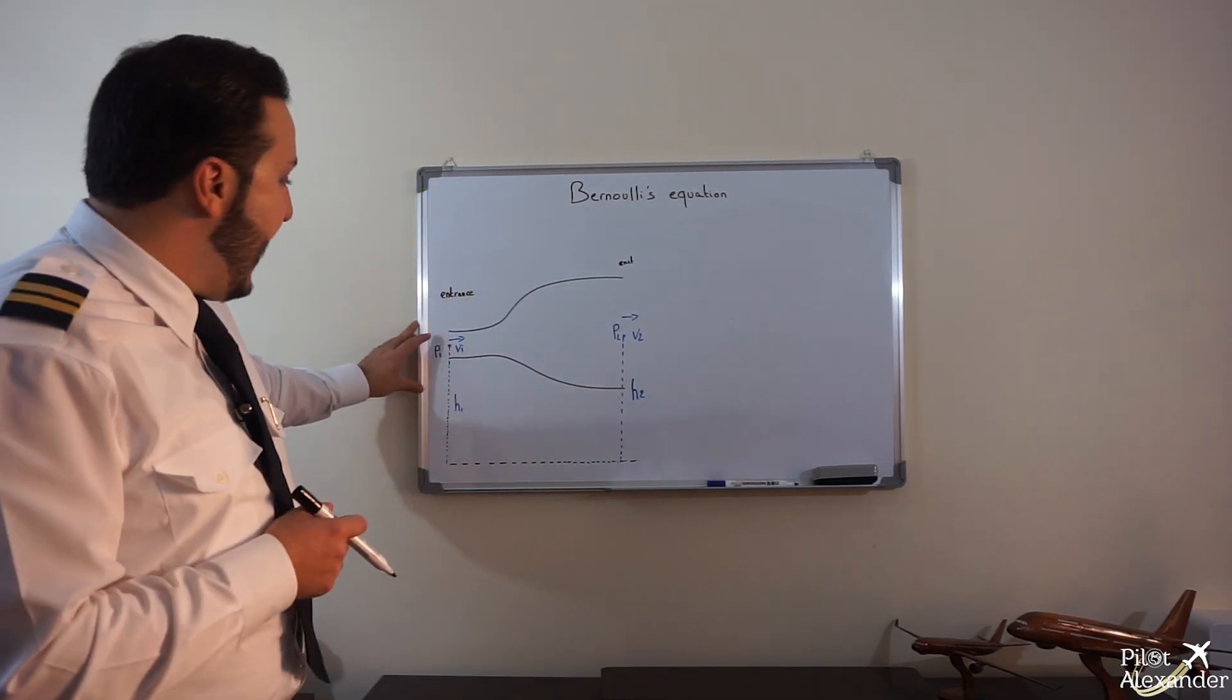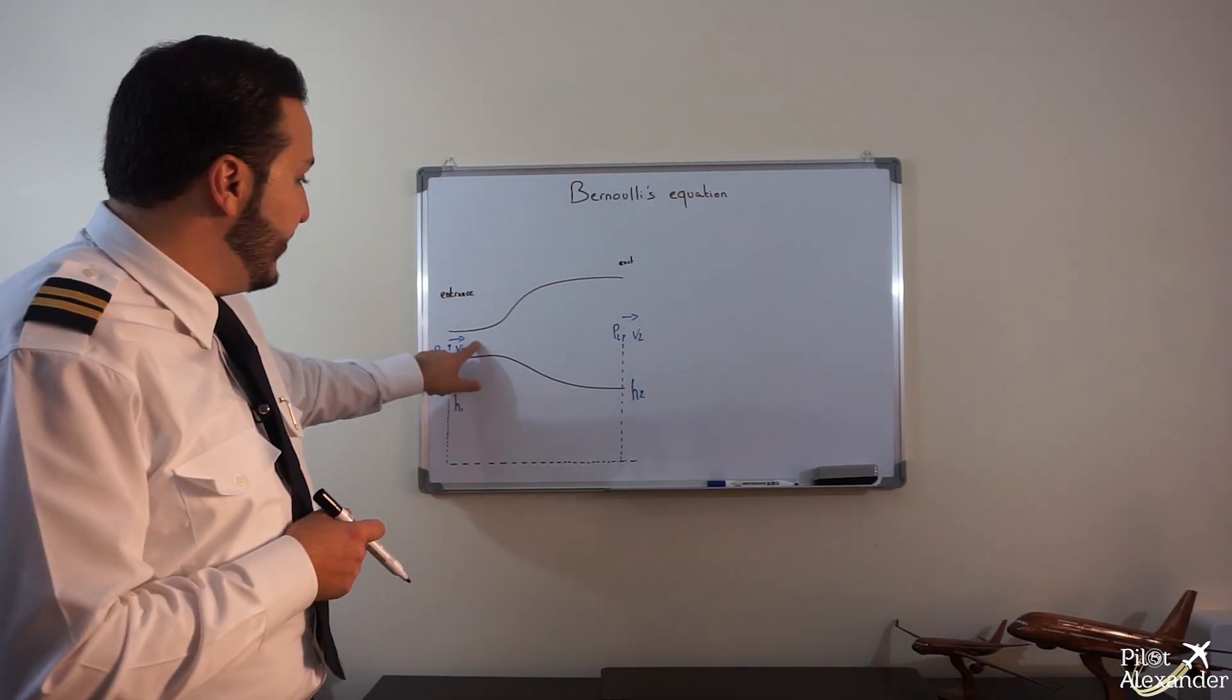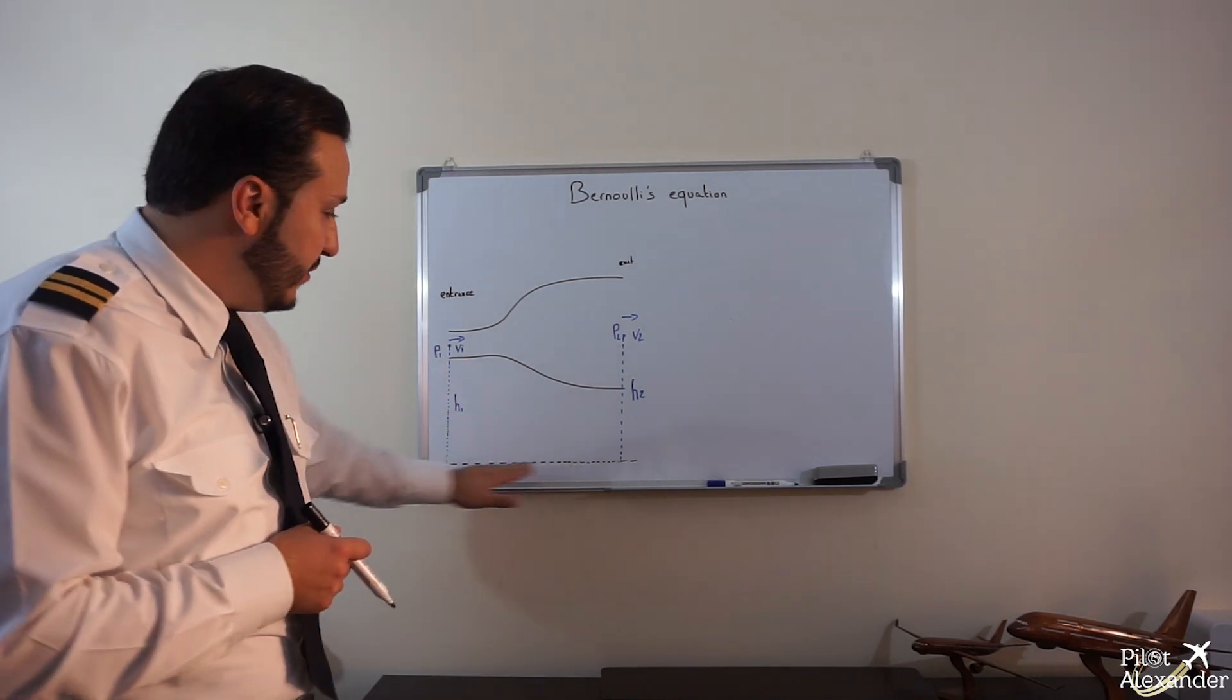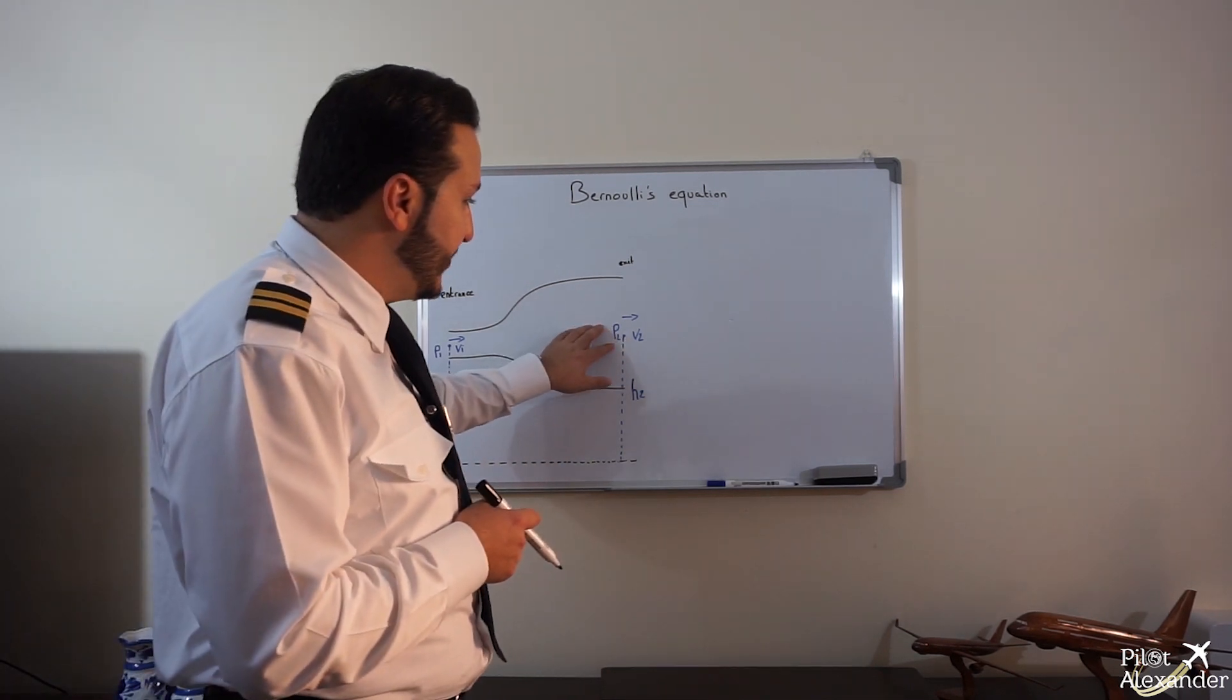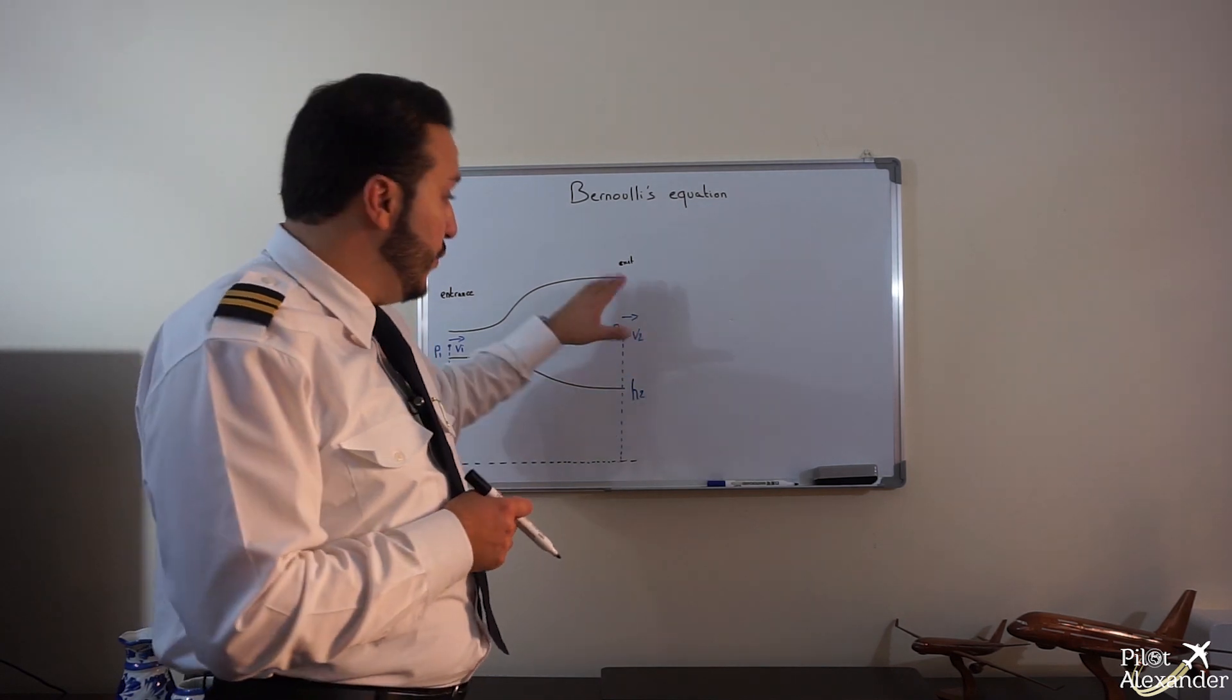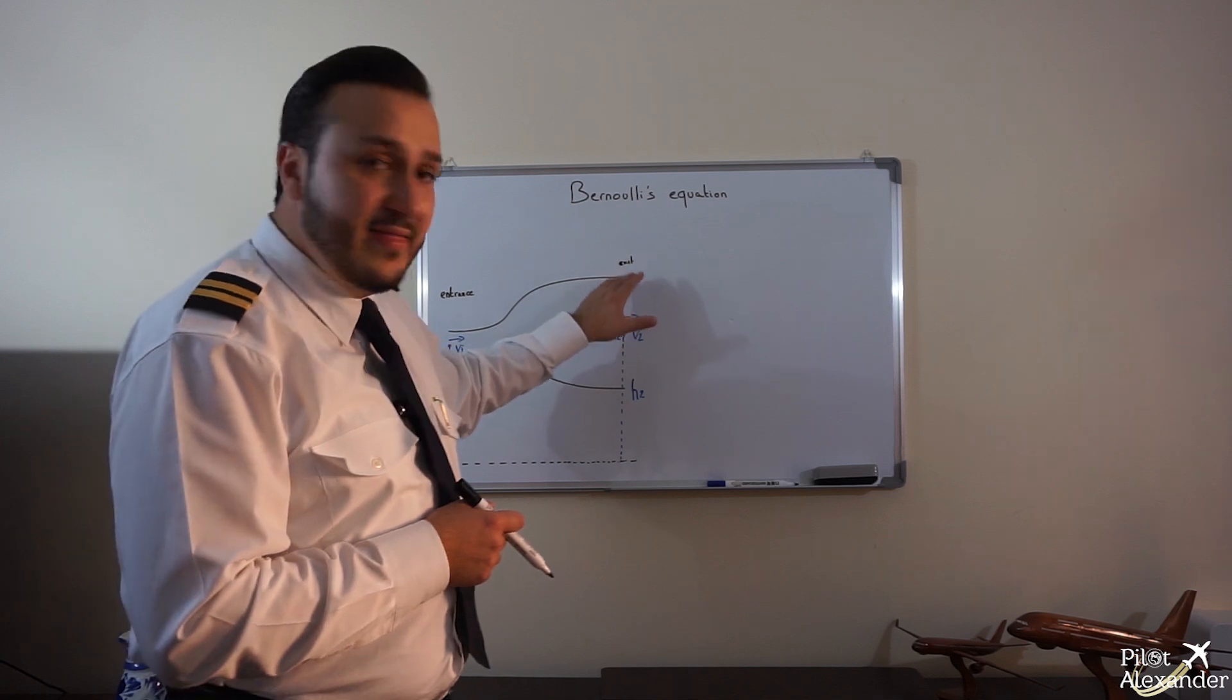So what happens is we have pressure at position one, velocity at position one, and the height in reference to the ground at position one at the entrance. At the exit, we have the pressure at position two, velocity at position two, and the height at position two that changes clearly compared to position one.